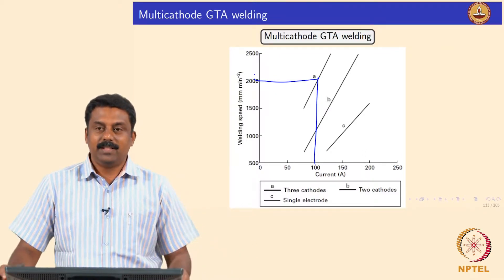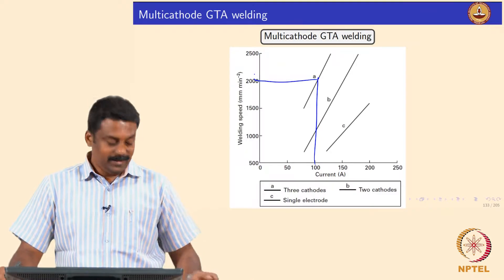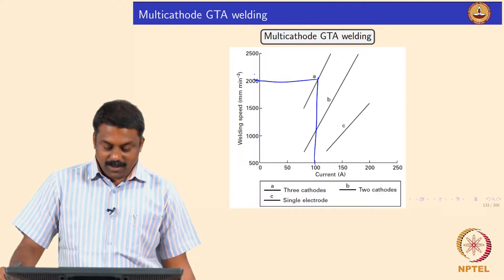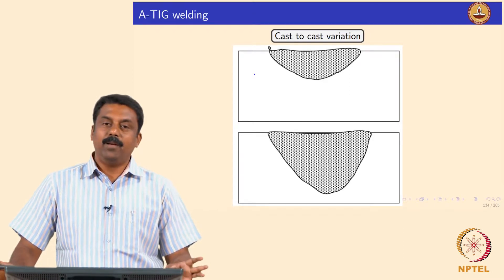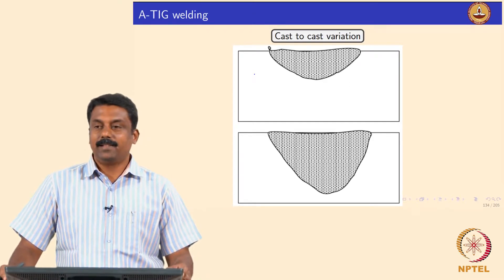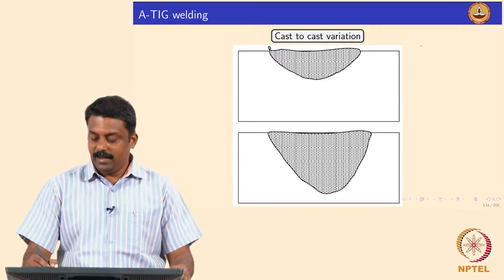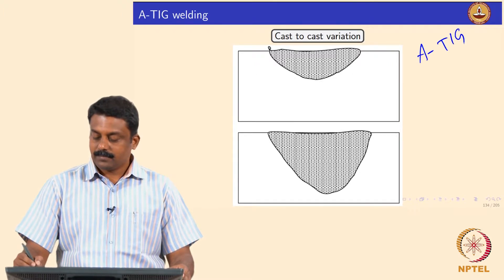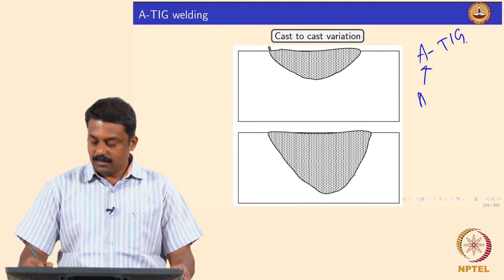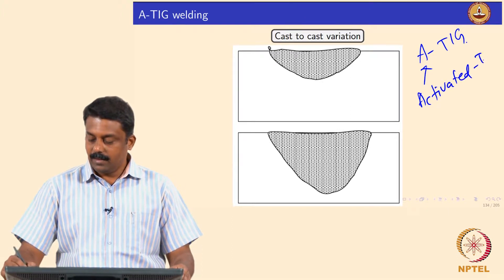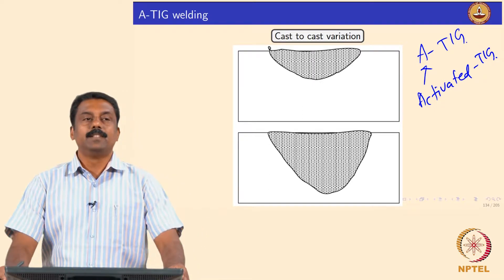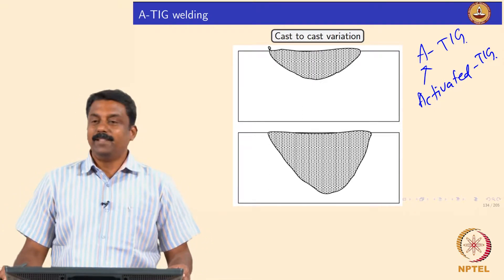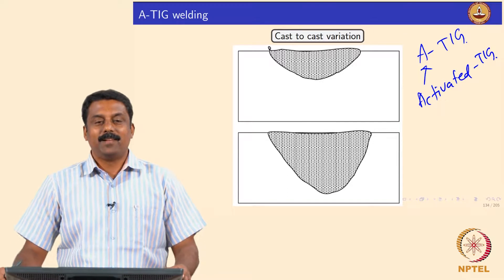Another development very commonly used at industrial scale is known as A-TIG, where A stands for Activated TIG. What is activated here? The pool is activated.